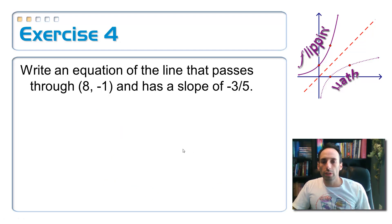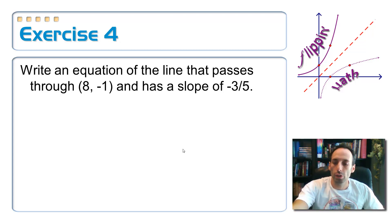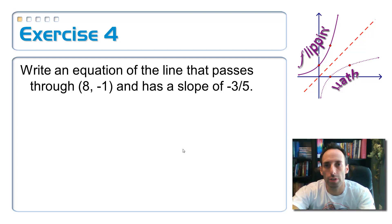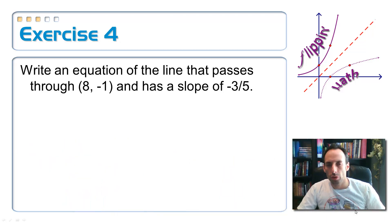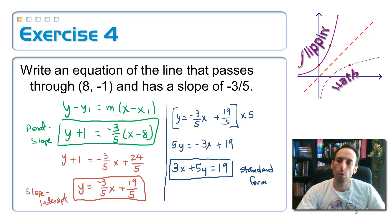Write an equation of a line that passes through the point eight negative one and has a slope of negative three fifths. This is a problem that I want you to do on your own. So pause the video. You come up with the answer, and then come back, check, see if it's right. So I'm wondering if you did as much work as I did.